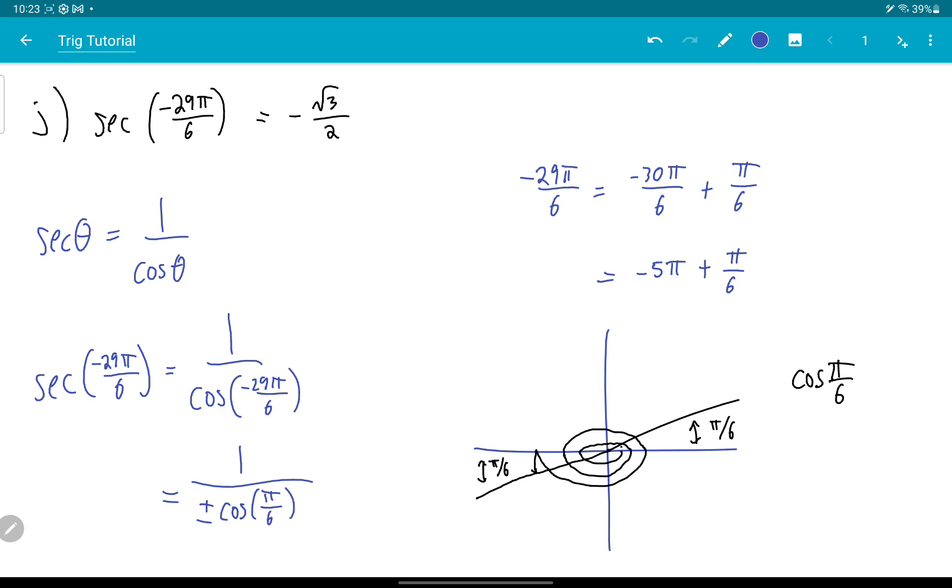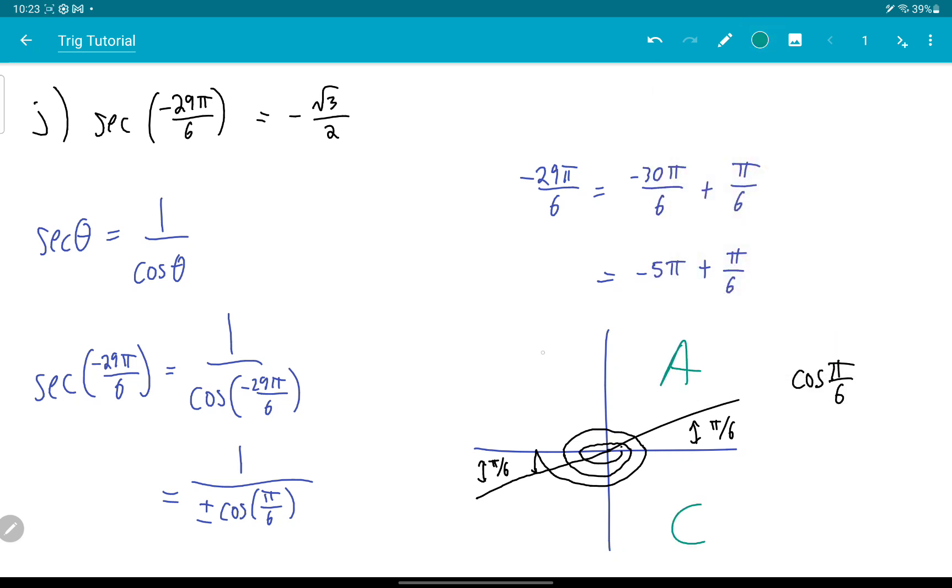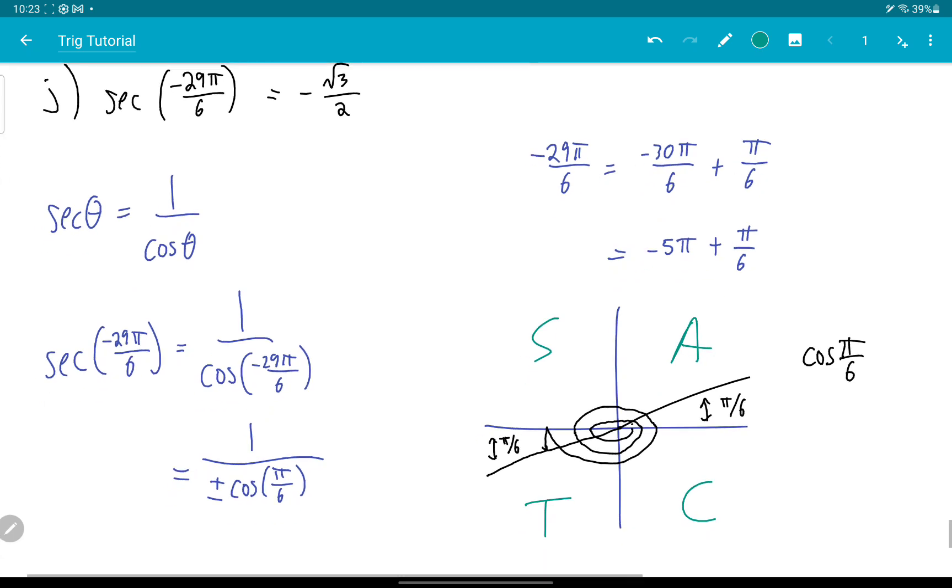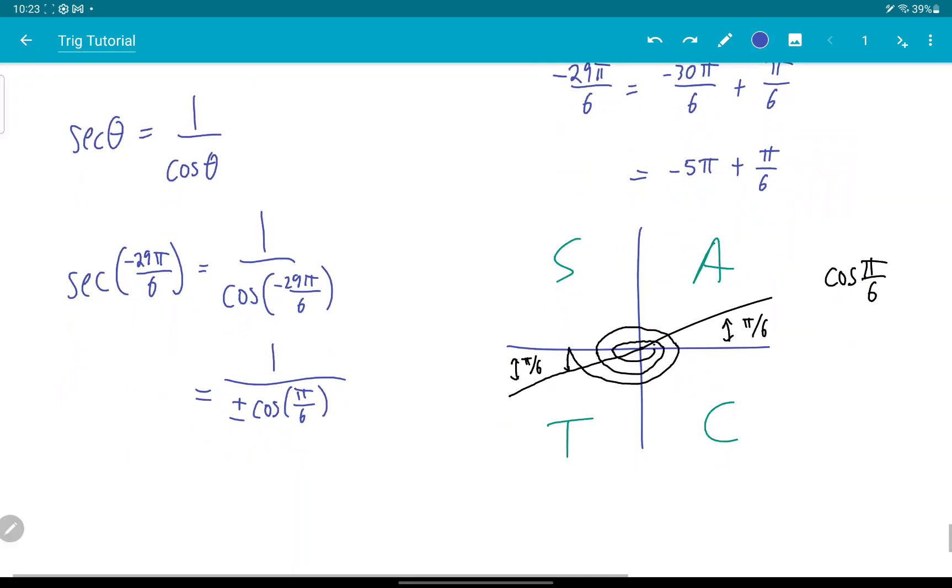Now I use my CAST rule, C-A-S-T, to tell me that only tangent is positive down here. So cosine is negative. So I get 1 over negative of the cosine of π over 6.